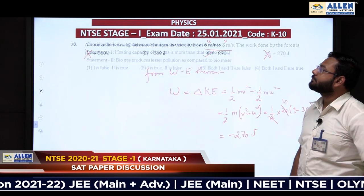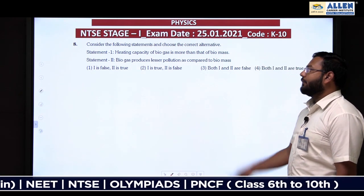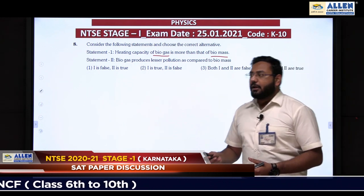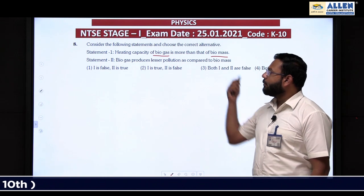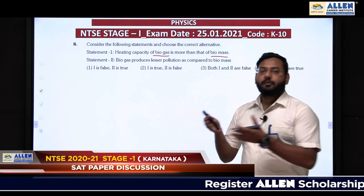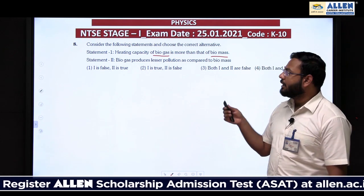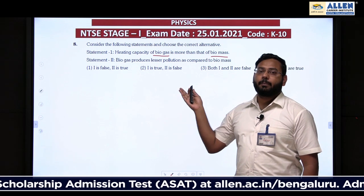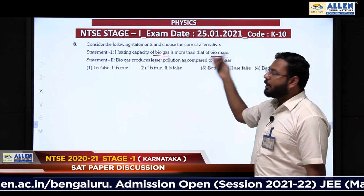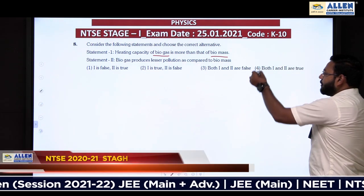Question 8: Pure conceptual question about biogas and biomass. Statement 1: Heating capacity of biogas is more than biomass — correct, because biomass converted into biogas is much more efficient in burning, producing more heat. Statement 2: Biogas produces less pollution compared to biomass — also correct, because biogas is a refined mixture mainly of methane. Both statements are true. Option number 4 is correct.